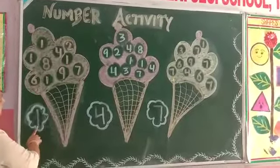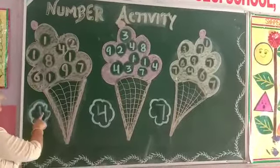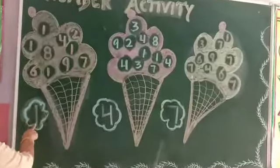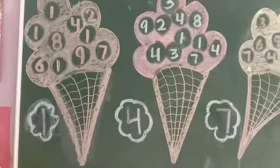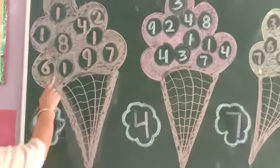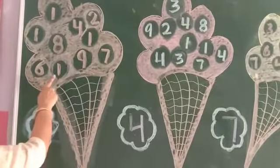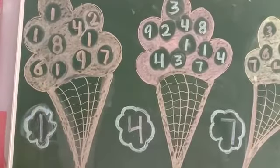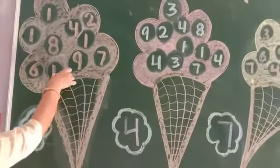Choose number 1 in chocolate ice cream. This is number 1. Find number 1 and paste a star on it. This is number 1 — paste the star.